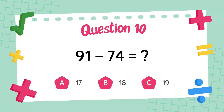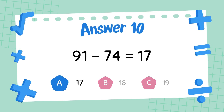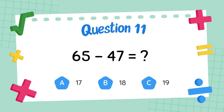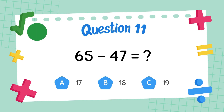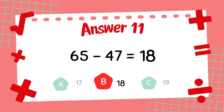What is 91 minus 74? The answer is 17. What is 65 minus 47? The answer is 18.